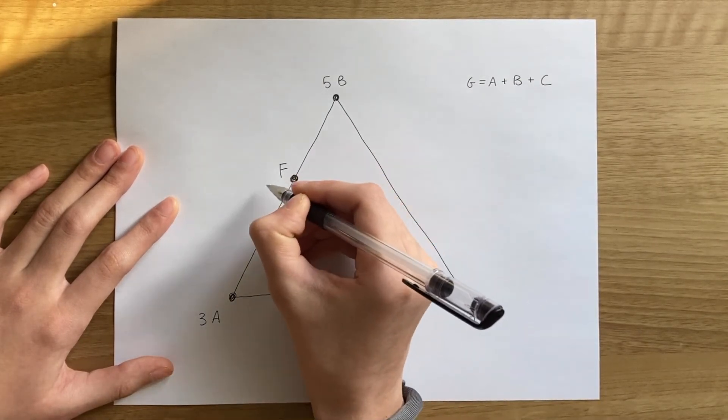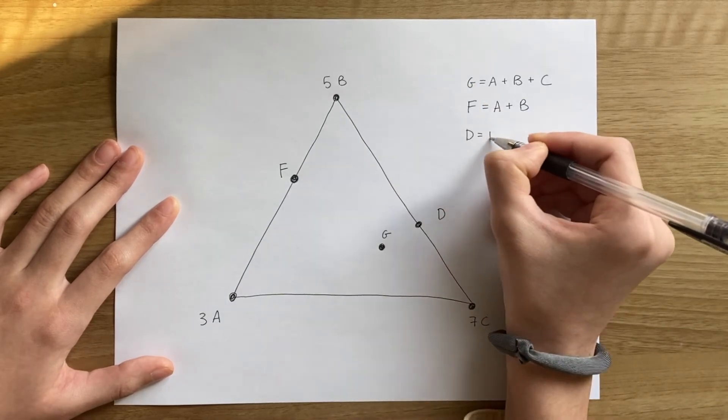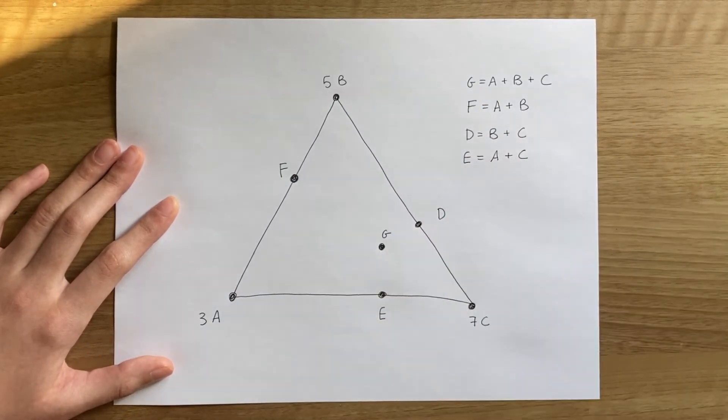We can also say that F is the center of mass of AB, D is the center of mass of BC, and E is the center of mass of AC.